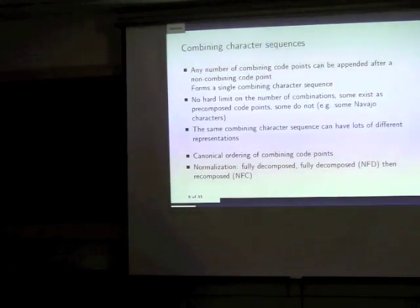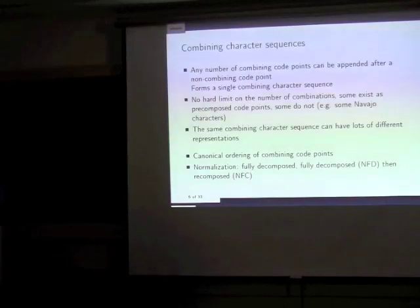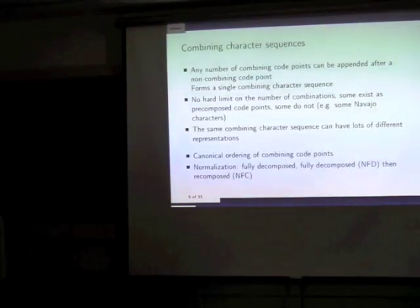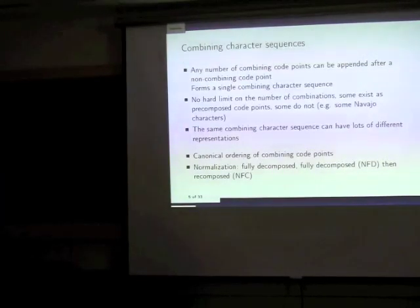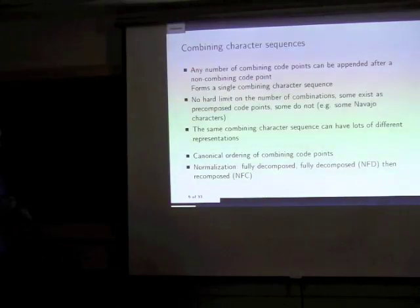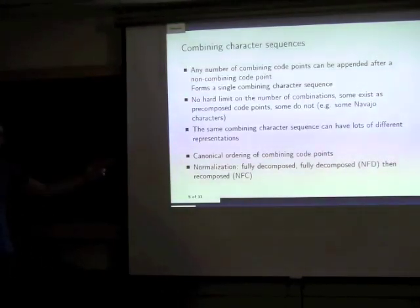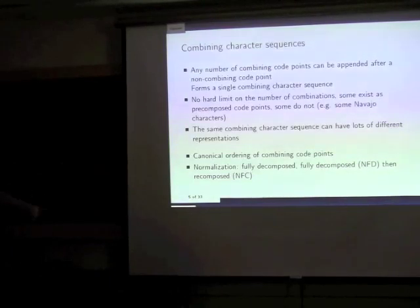There's no limit on the number of combining characters, but Unicode allows you to set a limit of 32 if you need a fixed buffer — which is something I do in Boost Unicode. You can have many different representations of the same character by combining components in different orders. That's why there is a canonical ordering, and you have normalization forms: fully decomposed (NFD), or fully decomposed and recomposed (NFC).